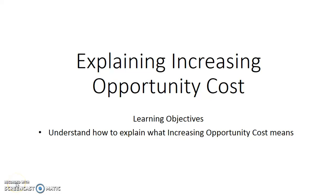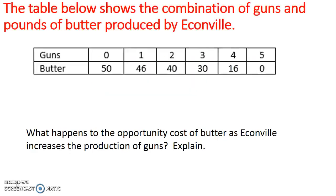In this screencast, we are going to understand how to explain increasing opportunity costs. In this situation, we have a table showing the combination of guns and pounds of butter produced by Econville. The guns are increasing in increments of one, and as guns increase, the butter is getting smaller and smaller.